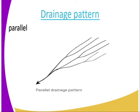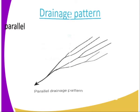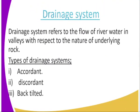Then we have the parallel drainage pattern. As you can see, those rivers are joining the main river parallel past one another. That is the reason why we refer to it as the parallel drainage pattern.